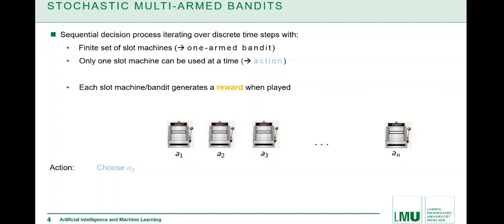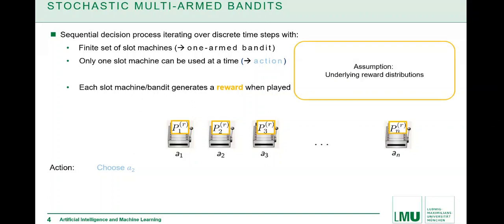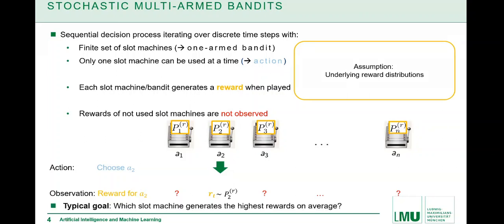Once we decide to choose one, for instance the second slot machine is played, we obtain a reward. This slot machine we picked is generating a reward. How is the reward generated? We have the stochastic setting so behind every slot machine there is an unknown reward distribution and the reward we obtain is a noisy sample from the underlying reward distribution.